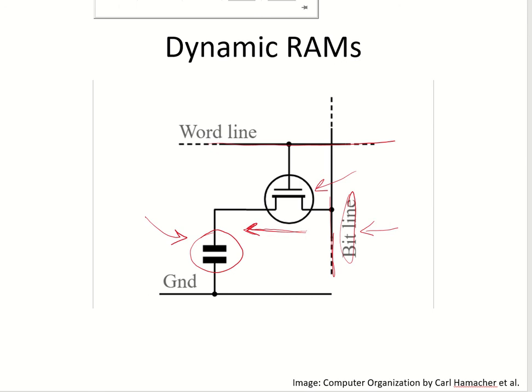How does a read operation take place? When a read operation has to take place, again the word line will be enabled, which will enable the transistor and turn it on. The sense and write circuit, which is connected to the bit line, will detect whether the charge on the capacitor is above or below some threshold.